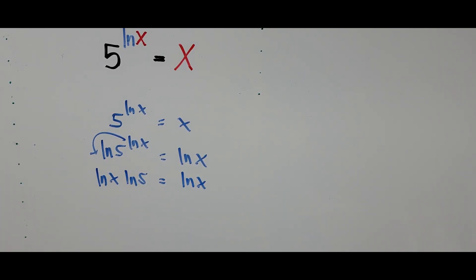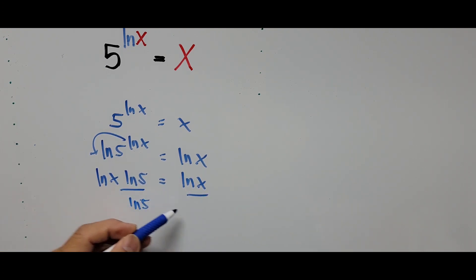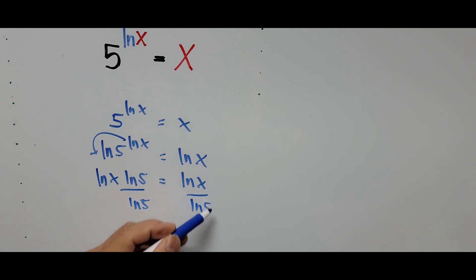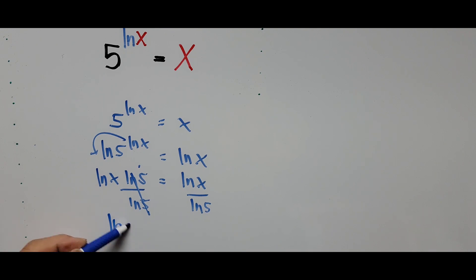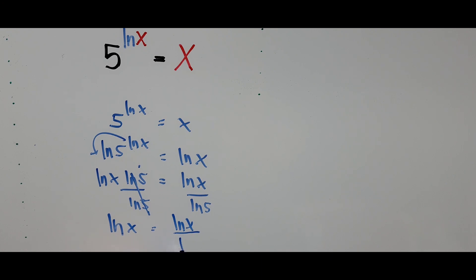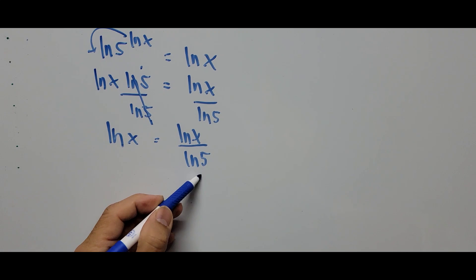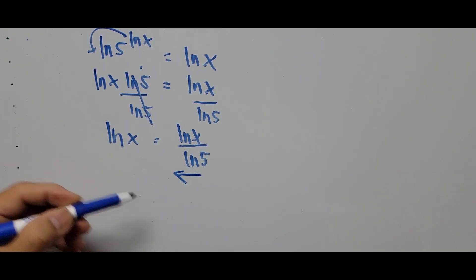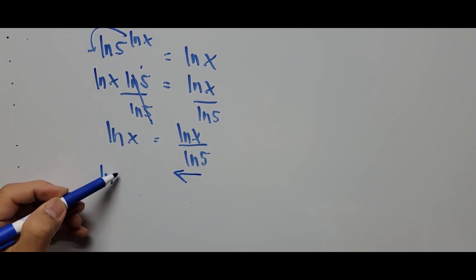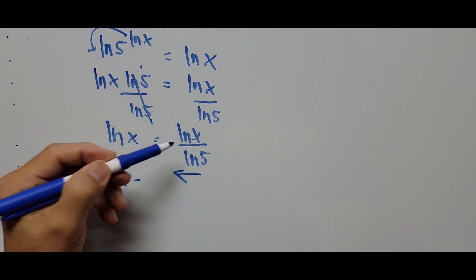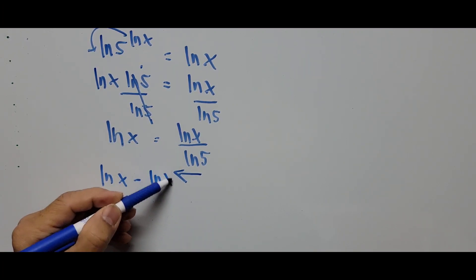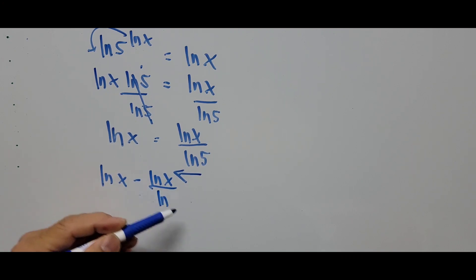We divide the whole equation by ln of 5 — this cancels — giving us ln of X equals ln of X divided by ln of 5. From here we transpose the term from the right side to the left side, so we have natural logarithm of X minus natural logarithm of X divided by natural logarithm of 5 equals 0.